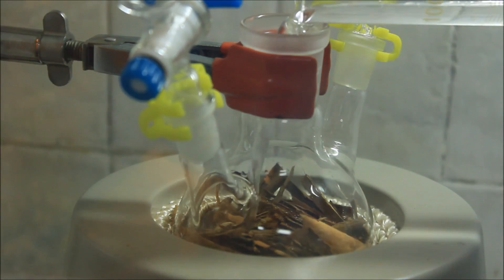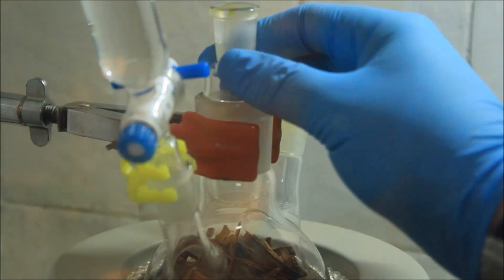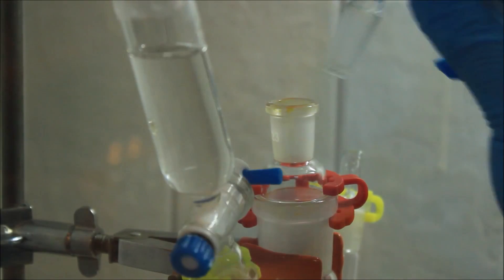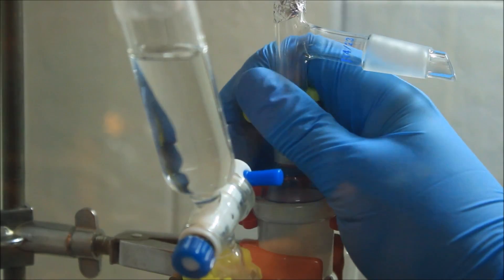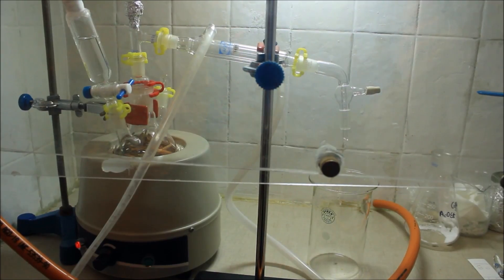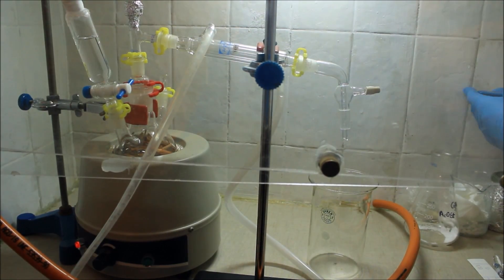Then, an addition funnel is placed in one of the necks of the RB flask. The other neck is blocked using a glass cork. Then, a general distillation setup is assembled. The water flow and the heating mantle are then turned on.